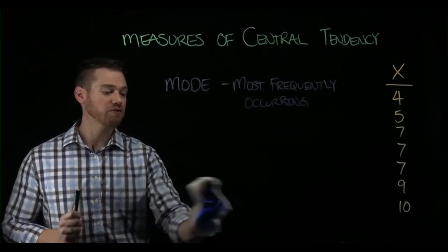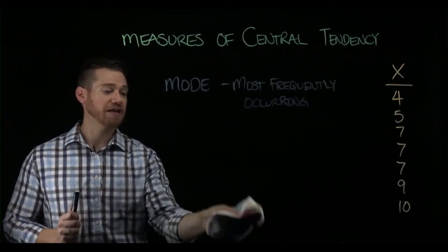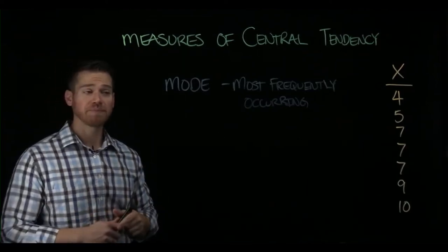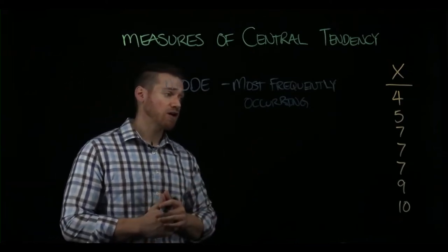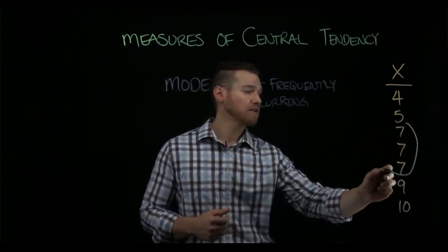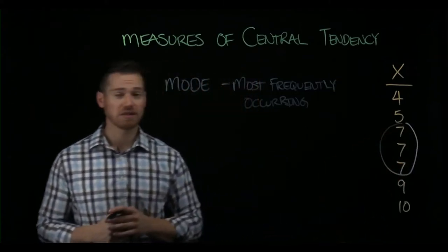So the mode can be seen quickly in a frequency table. You can also look for it in a distribution like a histogram that graphs the distribution simply by looking for the peak. If we just have a set of raw scores, we would look for whatever score occurs most often. In this case, we see that seven has three occurrences and all the other ones occur only once, so the mode would be seven.